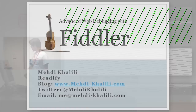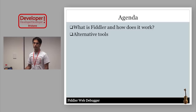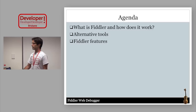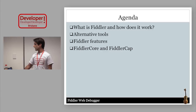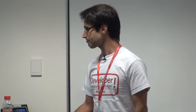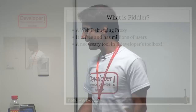What are we going to cover today? We're going to start with what Fiddler is and how it works. We'll have a look at alternative tools to Fiddler. We'll go through Fiddler's major features. We'll have a look at Fiddler Core and Fiddler Cap. And if we get any time left, we'll go through the remaining features of Fiddler. Let's get started — I have to go a bit fast because we've got a lot to cover.